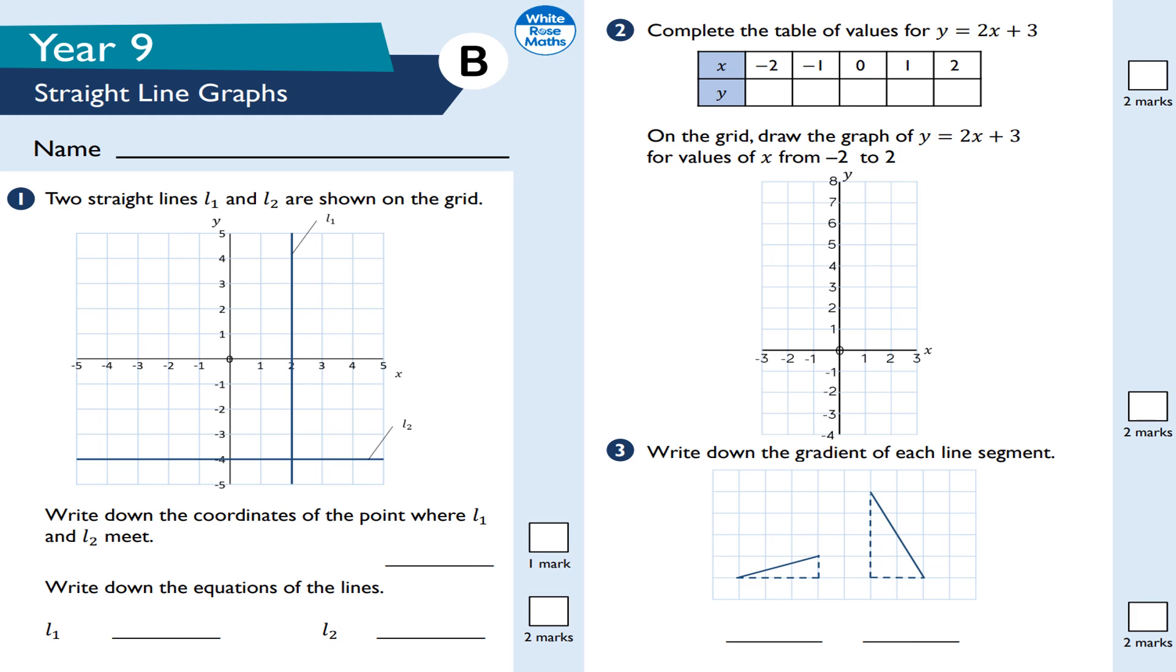So start with question number one. Two straight lines L1 and L2 are shown on the grid. Write down the coordinates where the point L1 and L2 meet. Well, L1 and L2 actually meet here, so that'll be along the corridor and then down the stairs or down the basement. So it's 2 minus 4.